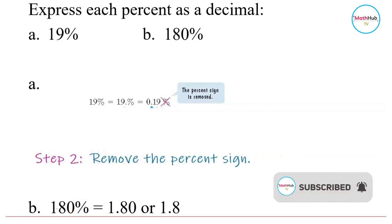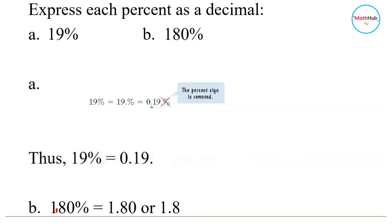This is now the new decimal point. That's how you get 1.80, or 1.8.